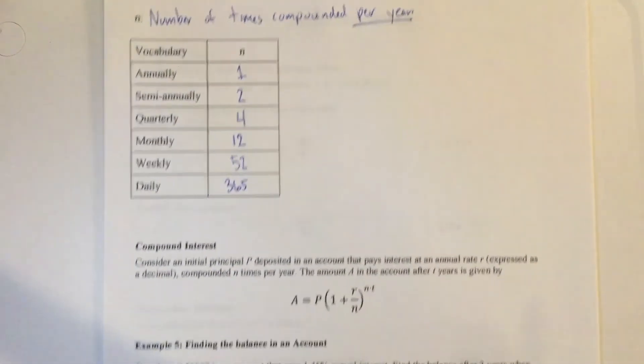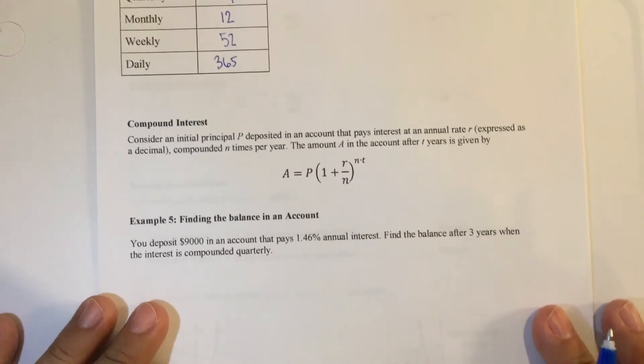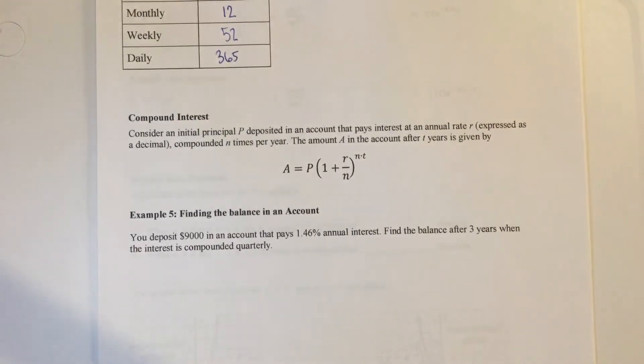Now we're going to go to this compound interest formula. Consider an initial principal P deposited in an account that pays interest at an annual rate R expressed as a decimal, compounded N times per year. The amount A in the account after T years is given by this function.